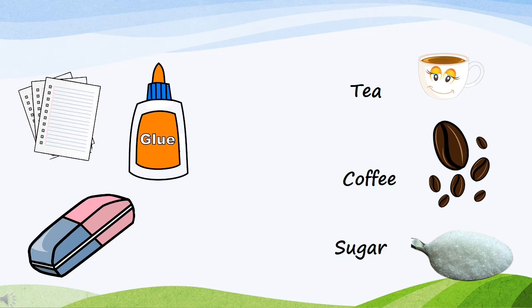Children, do you like to eat sweets? Sugar is made from plants — we get sugar from the sugarcane plant. We get coffee from coffee beans and we get tea from tea leaves. So children, plants are useful to us in many ways.